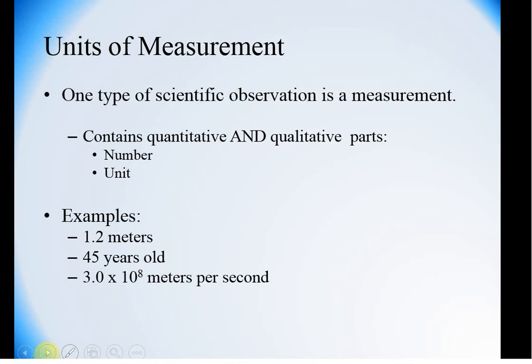So one type of scientific observation is a measurement. But here we need not only a number but we need a number and a unit. You can't just say five, you need to say five centimeters. And so you have to have both the quantitative and the qualitative parts. So here we have 1.2 meters, 45 years old, the speed of light which is 3.0 times 10 to the eighth meters per second. You don't want to leave a number without a unit, especially in lab guys.